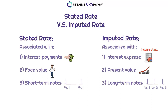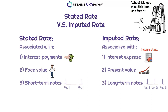When we have notes payable, we're generally going to have interest associated with the note. There are two primary rates to focus on: the stated rate and the imputed rate. Interest rates represent the profit on the loan. The name of the game is determining whether this is a reasonable loan — does it seem legit, or are we giving a family member a zero-interest loan and saying no interest is necessary? So again, we have the face value, which is the total cash payment, and the stated interest rate relates to the cash going out the door or coming in.